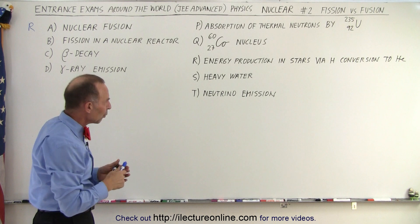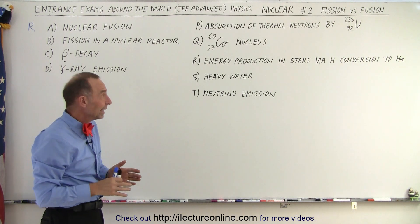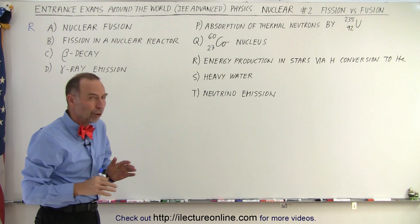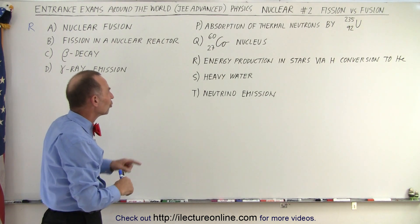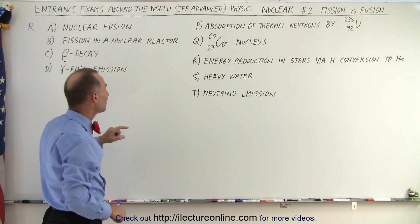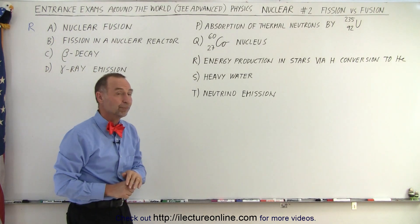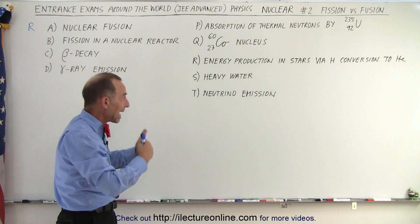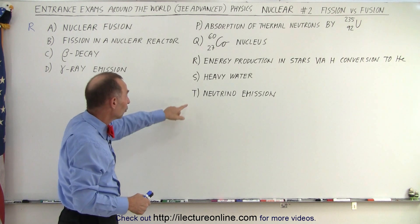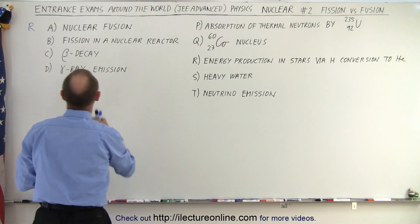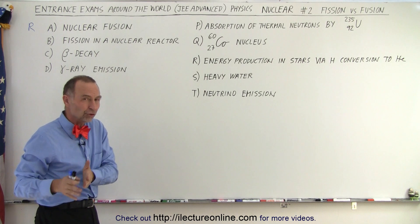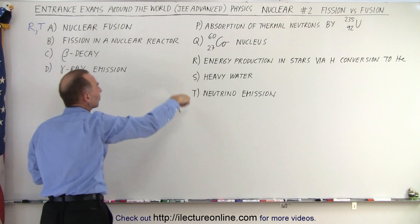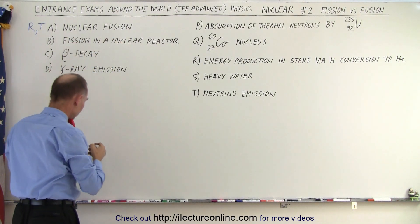How about heavy water? Heavy water is a moderator used in production of nuclear power, electricity because of nuclear power, via fission, not fusion. So this does not belong to A. How about neutrino emission? Well, we know that the sun creates neutrinos in the reaction in the conversion from hydrogen to helium. So T would also be appropriate for nuclear fusion, especially when it deals to nuclear fusion in stars. So we can say that R and T both are appropriate statements for A.